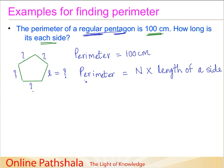So what we are given here is perimeter so I can just replace this perimeter with 100, and then what is N? N is the number of sides so for pentagon it is 5 and what I don't know is L, the length of the side.